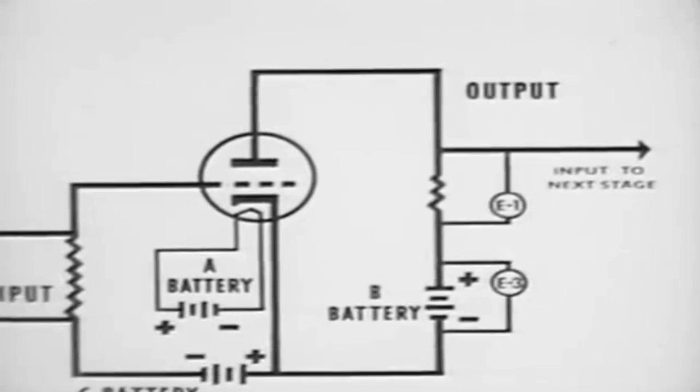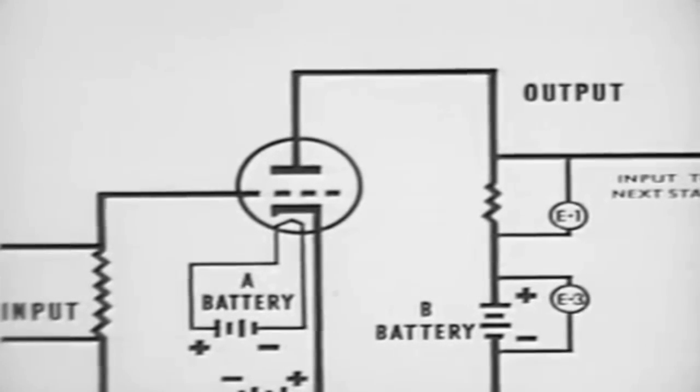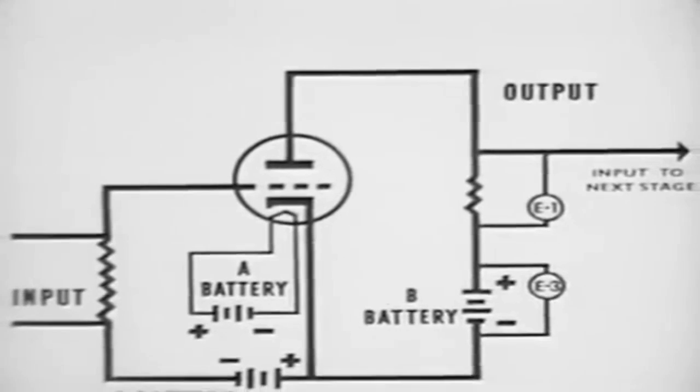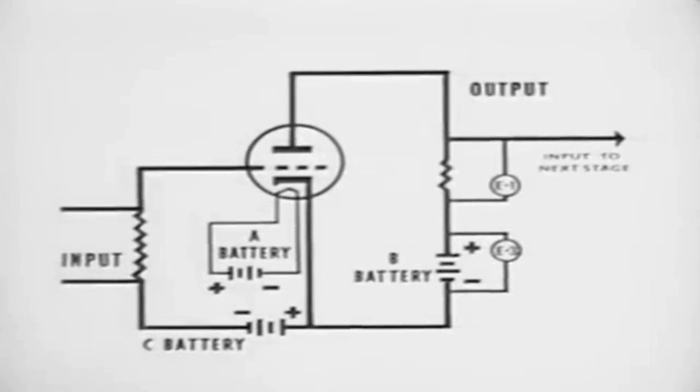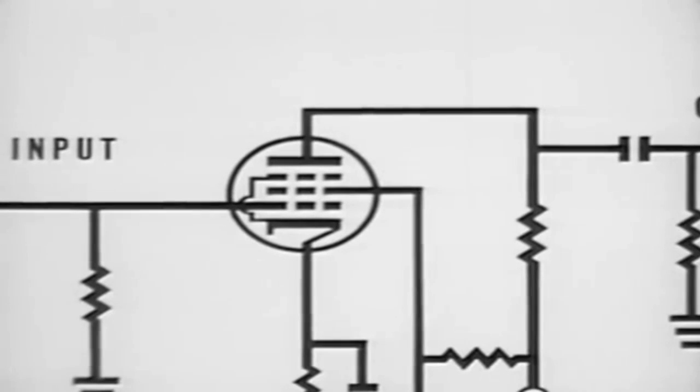For a given vacuum tube voltage amplifier, the impedance of the load is usually as high or higher than the plate resistance of the tube. A tube manual will give the plate resistance for the tube selected and its recommended operating voltages. For voltage amplification, the most common choice of tubes is the pentode.